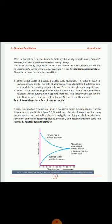The second type is when the reaction does not stop. Only the rate of forward and reverse reaction becomes equal to each other, but they take place in opposite directions — forward reaction from left to right, and reverse reaction from right to left. Only the direction is changed. This is called dynamic equilibrium. Dynamic means the reaction is still continuing and does not stop.